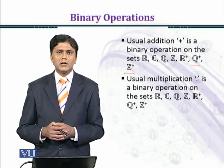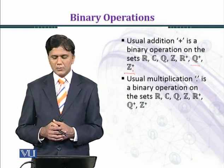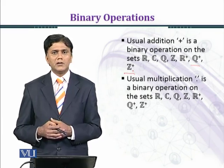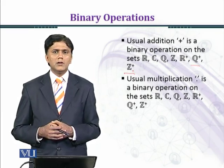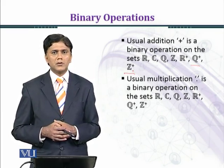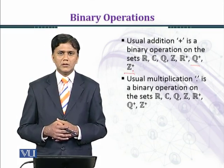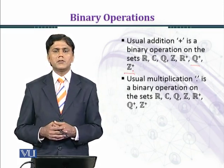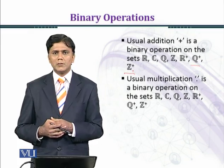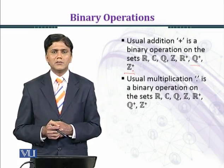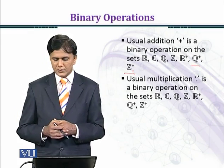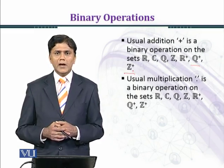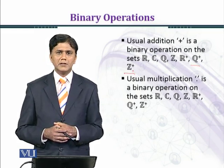Similarly, when you multiply two positive real numbers you get a positive real number, and when you multiply two positive rational numbers you get a positive rational number. For instance, (5/2) × (7/3) gives a positive rational number. When you multiply two positive integers, like 5 × 7 = 35, you get a positive integer. So R+, Q+, and Z+ all have multiplication as a binary operation.